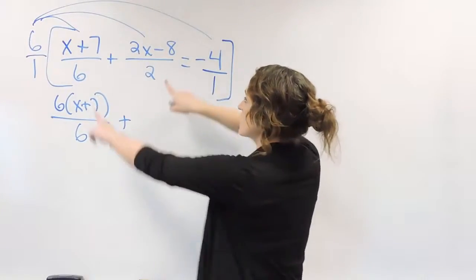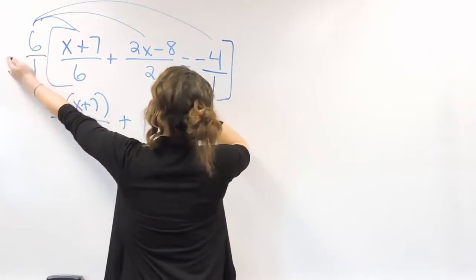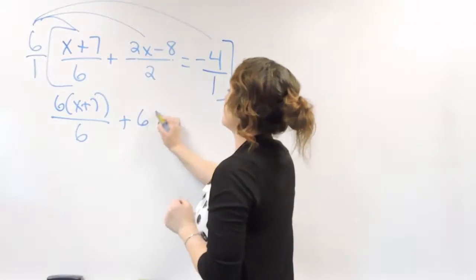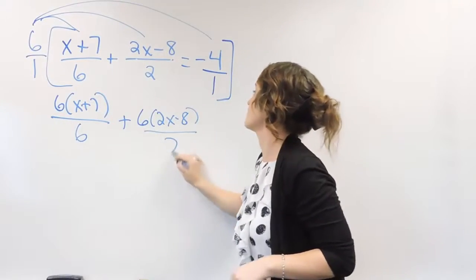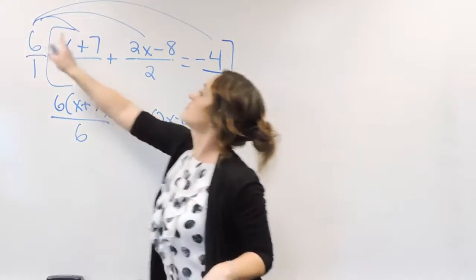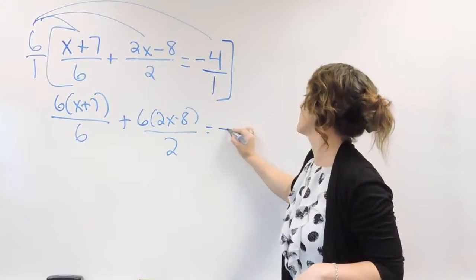Drop down your plus sign and our next multiplication here, 6 times the 2x minus 8 over 1 times the 2 is equal to 6 times negative 4, so that gives us a negative 24 over 1.